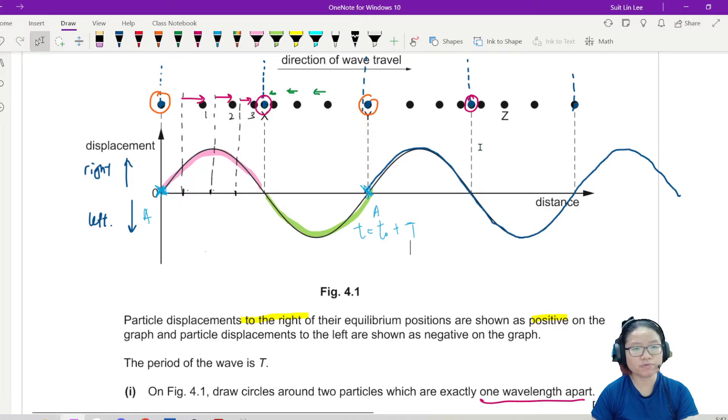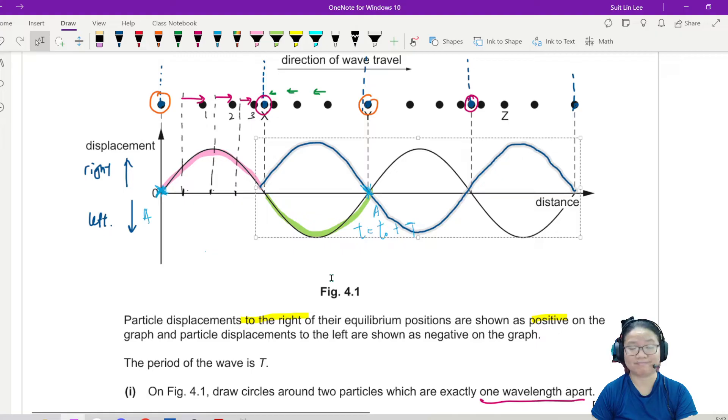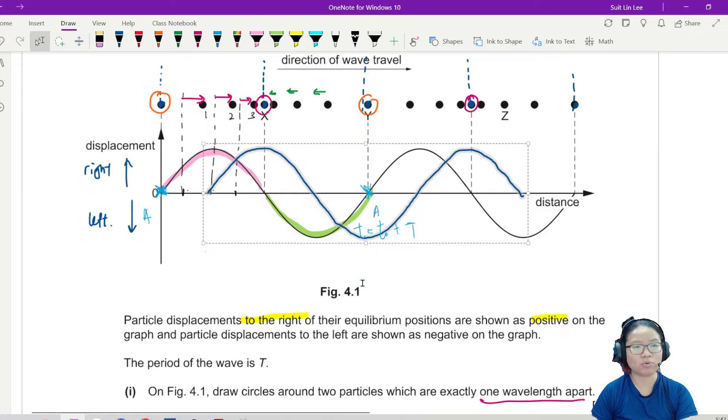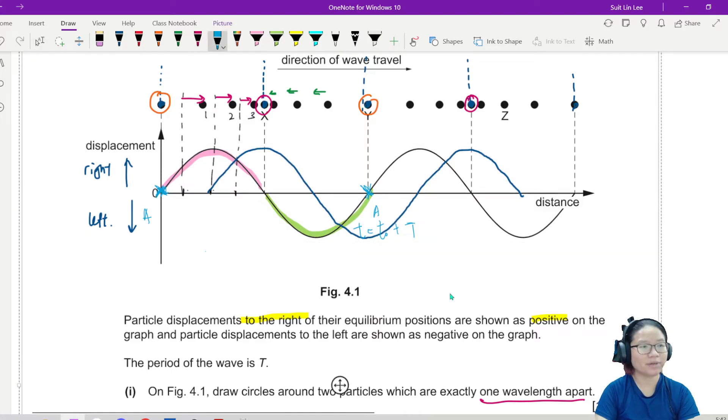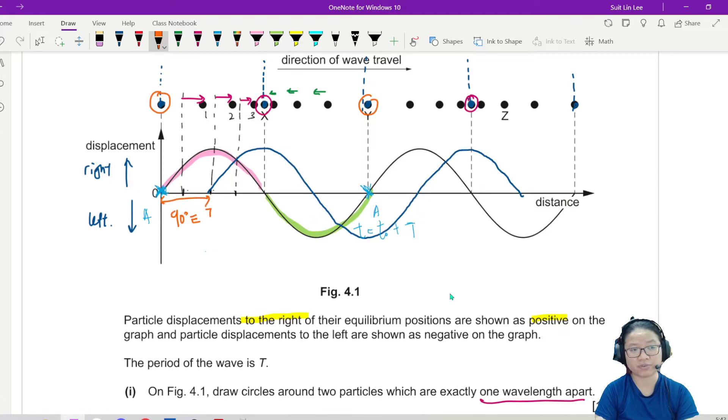But they want T over 4. So if the wave moves, this wave, when it moves from, the time taken for it to move from here to here is T. Where is T over 4? So half of it will be T over 2. Another half of half would be T over 4. Or the equivalent phase angle from here to here would be 90 degrees. It's just equivalent to T over 4.